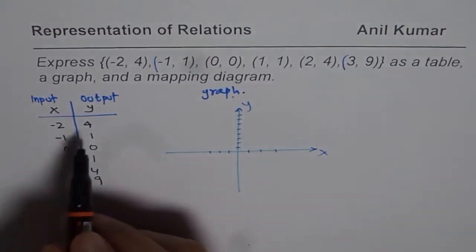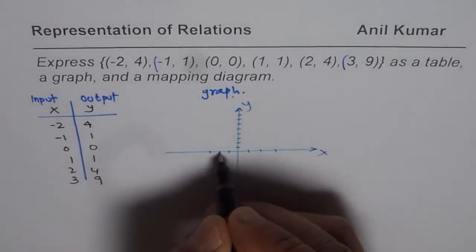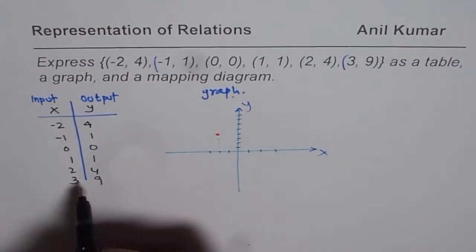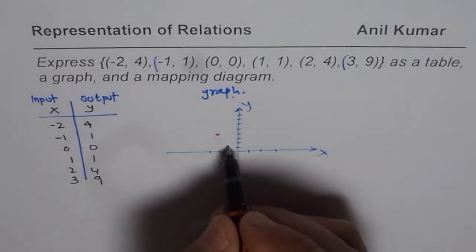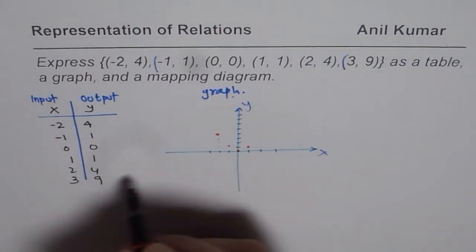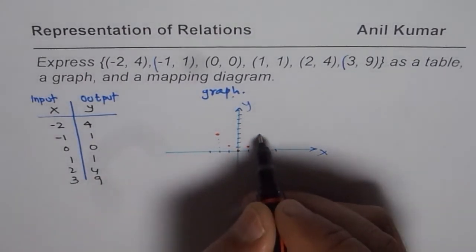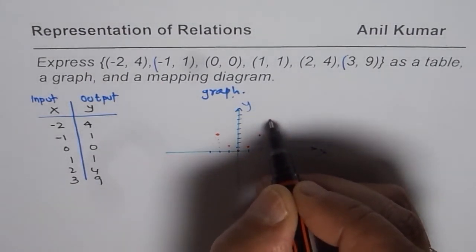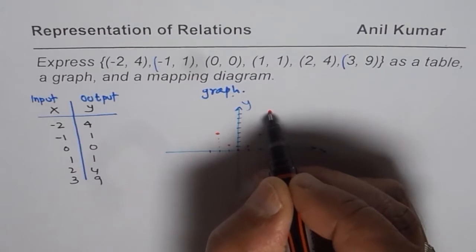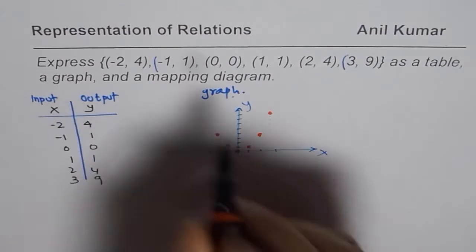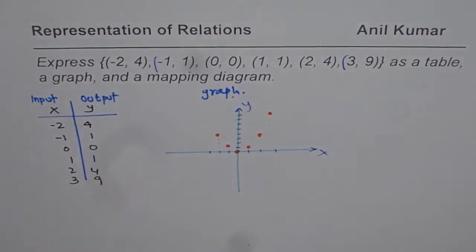The first point is (-2, 4) — two units to the left and four units up. Then we have (-1, 1), which is the next point. Zero, zero is right at the origin. Then (1,1), (2,4), and (3,9) — at x equals three, we go up to nine. These set of points represent the relation expressed in ordered pairs in the form of a graph.